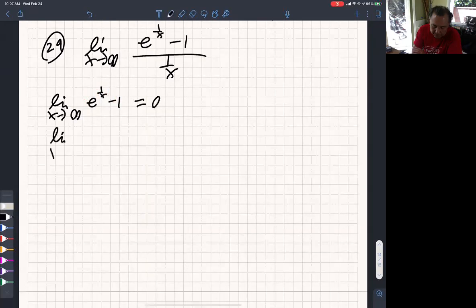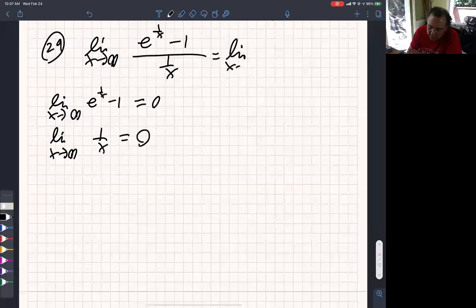The bottom, 1 over infinity approaches 0. So we know that L'Hopital's rule applies, so we will use L'Hopital's. What does L'Hopital say? Take the derivative of the top function and take the derivative of the bottom function.